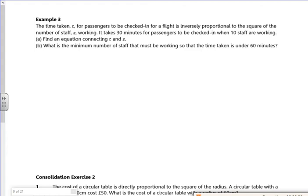So it says here the time taken T for passengers to be checked in is inversely proportional to the square of the number of staff. So I know that T is inversely proportional to the square of the staff. If I introduce my constant of proportionality, it takes 30 minutes when there's 10 staff working. So I know that T is 30, S is 10.